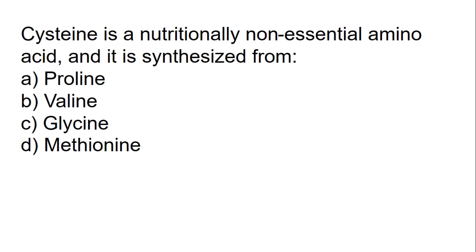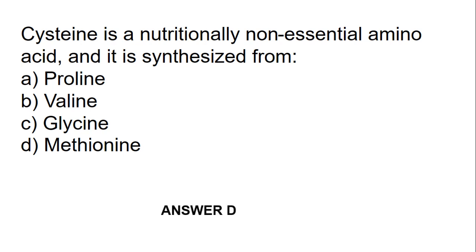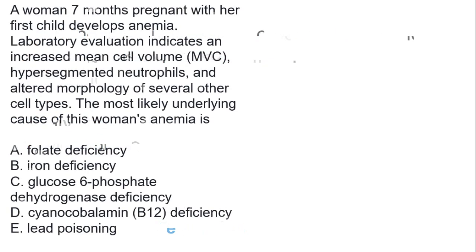Cystine is a nutritionally non-essential amino acid that is derived from methionine. The answer is D, which is methionine.